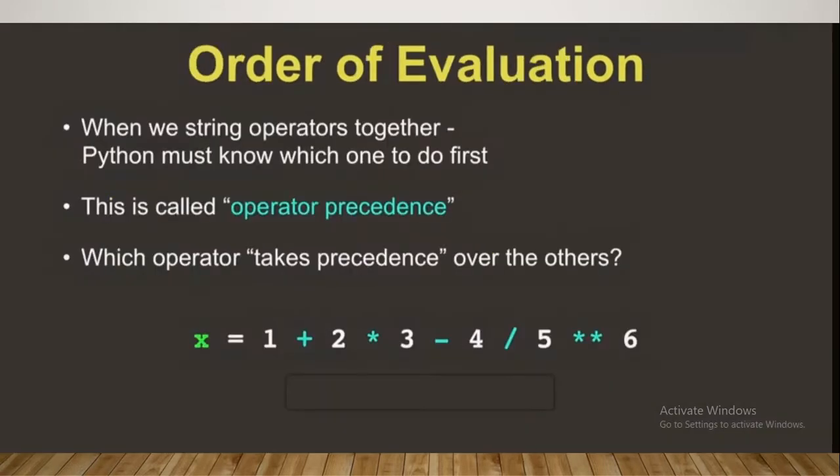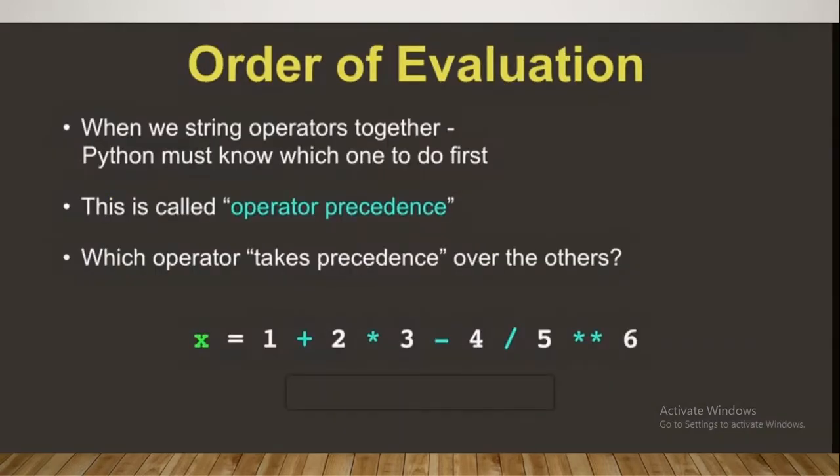Order of evaluation. As we already learned about the precedence things, when we string operators together, Python must know which one to do first. This is called operator precedence - which operator takes precedence over the others.